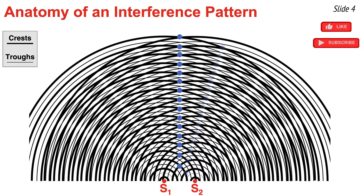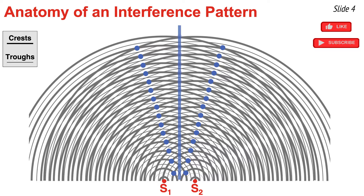If I look a little bit to the right of this central line of dots, I'll notice another line of dots in which crests are meeting up with crests, and in between those points are troughs meeting up with troughs. If I look to the left, I'll see them again — a whole collection of points of constructive interference of crests with crests and troughs with troughs. Since these dots lie along relatively straight lines, it's common to replace the dots with an actual line. Here's a line replacing all those dots in the middle, and I can replace the dots on the right and the dots on the left with lines as well.